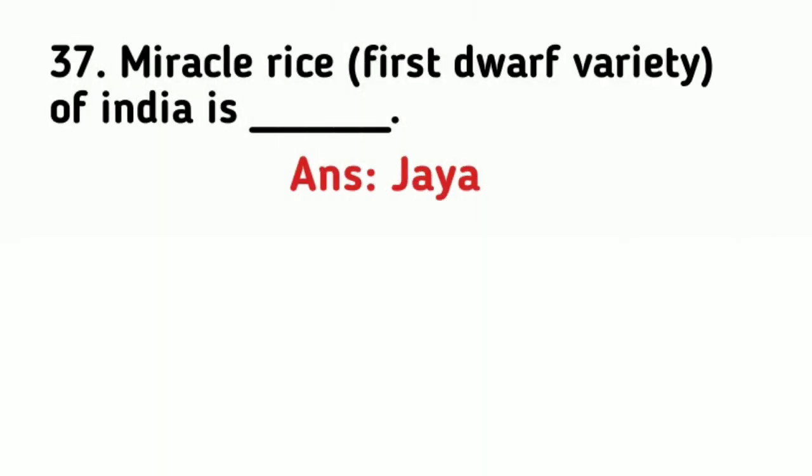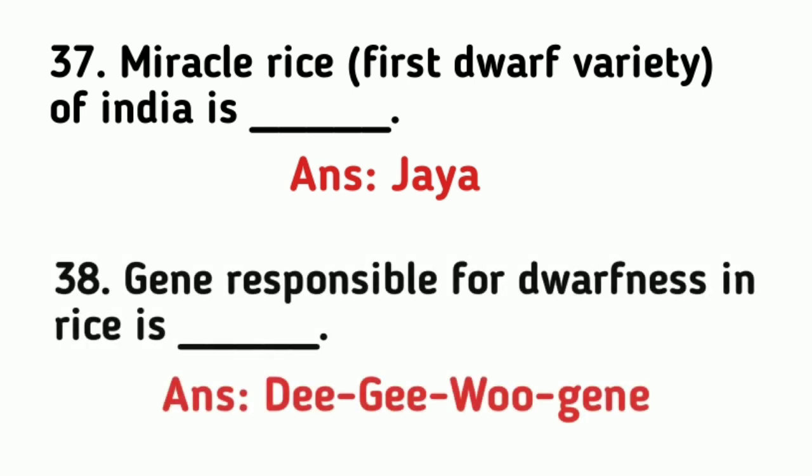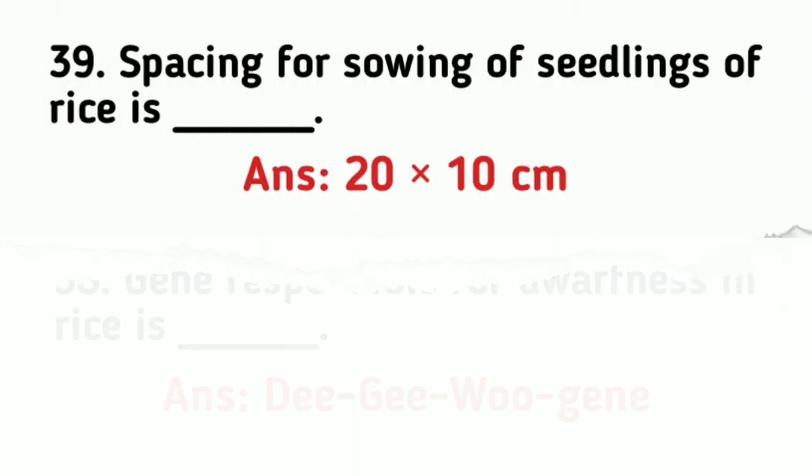Miracle rice and the first dwarf variety of India is Jaya. The gene responsible for dwarfness in rice is Dee-geo-woo-gen. The spacing for sowing of seedlings of rice is 20 by 10 centimeter.